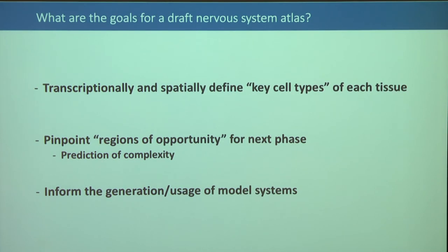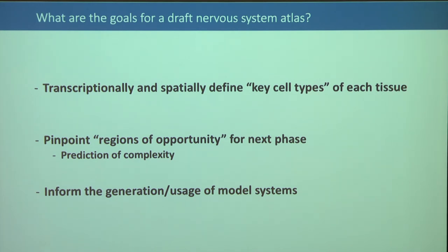Goals for a brain atlas 1.0 include transcriptionally and spatially defining key cell types in individual tissues, and using that process to pinpoint regions of opportunity for the next phase. The group asked: which anatomical subunits should be focused on further? Can we predict which structures will yield even more complexity to better focus efforts? Can information be used to generate and inform better models?